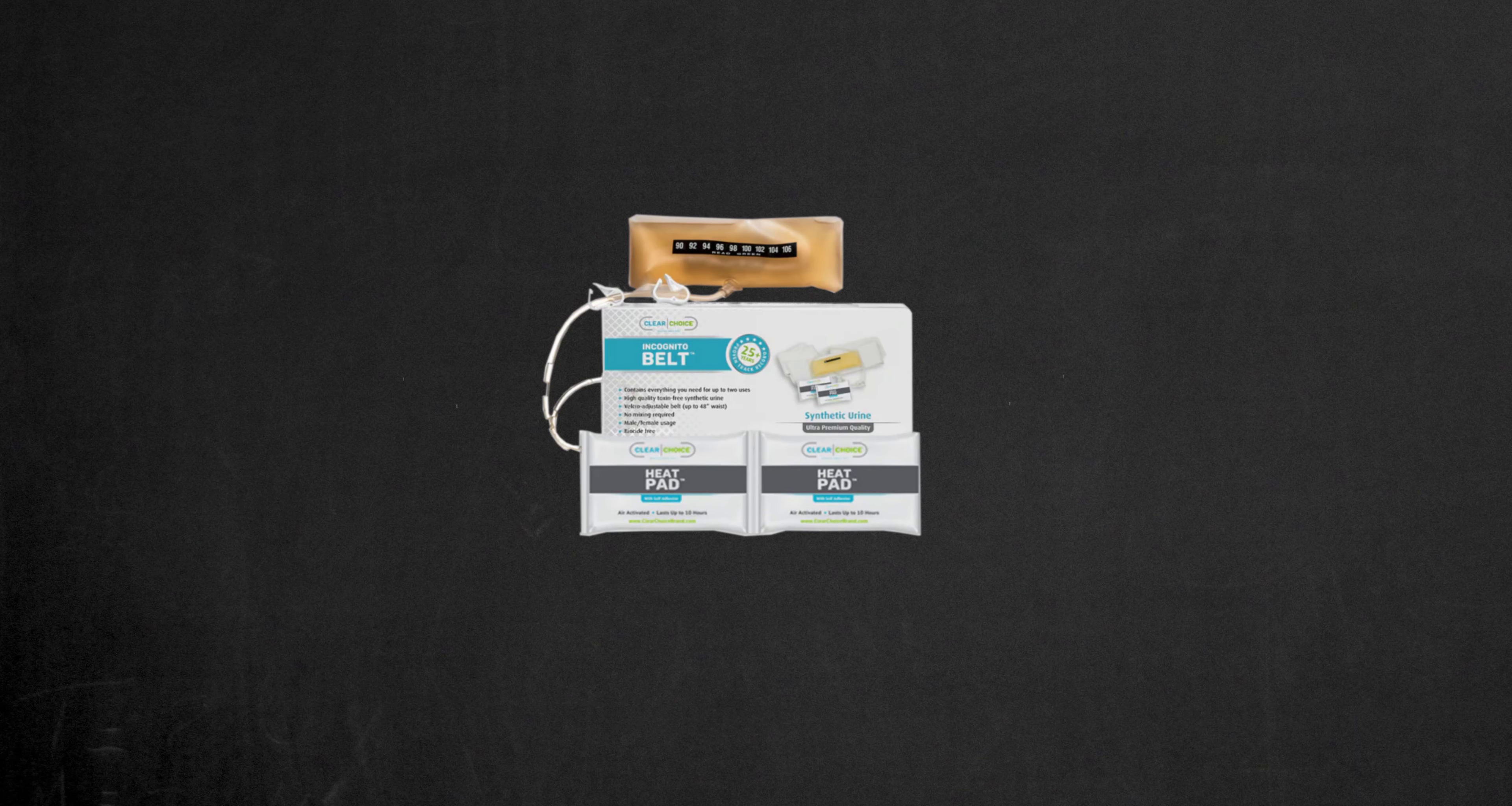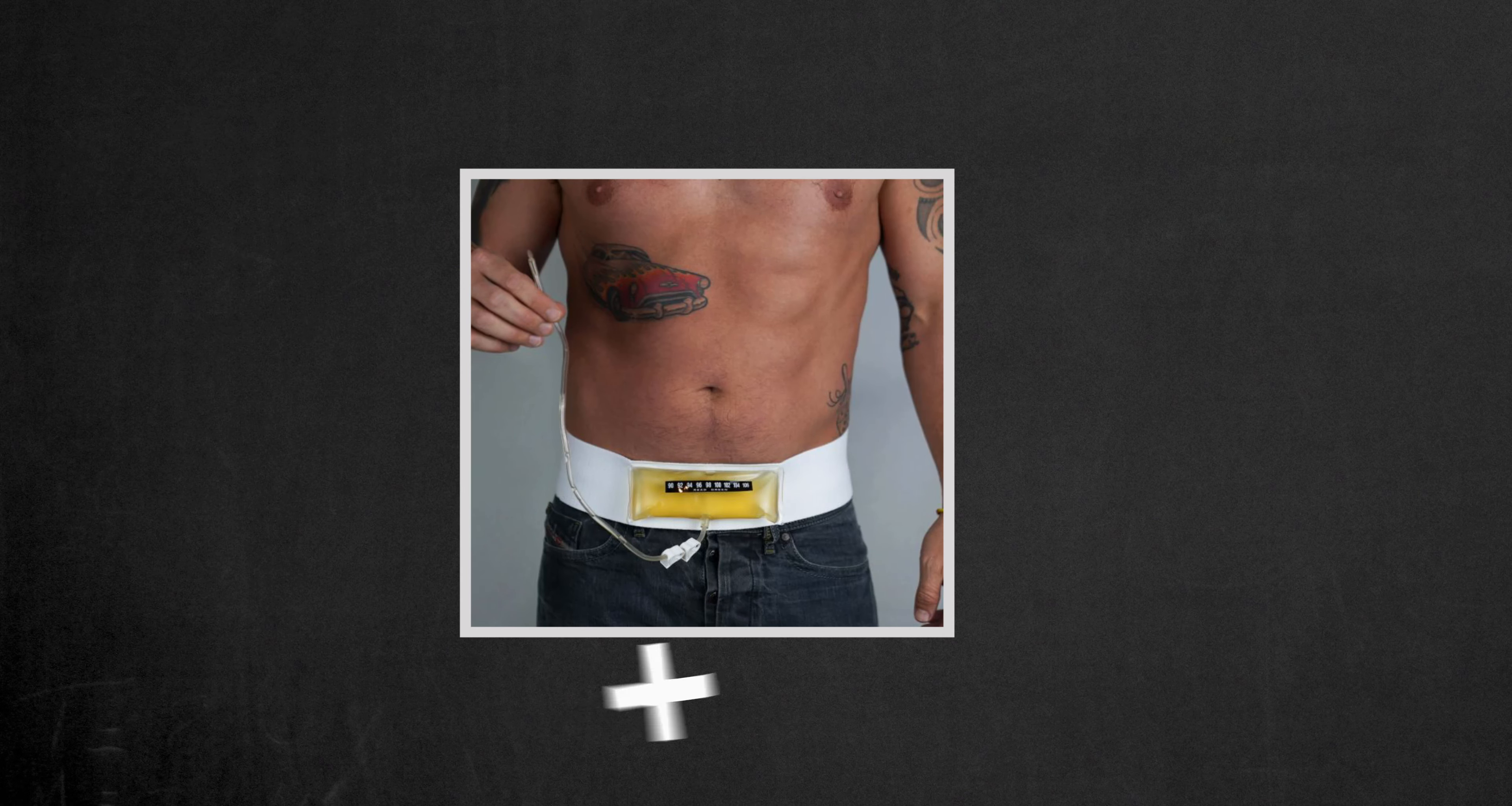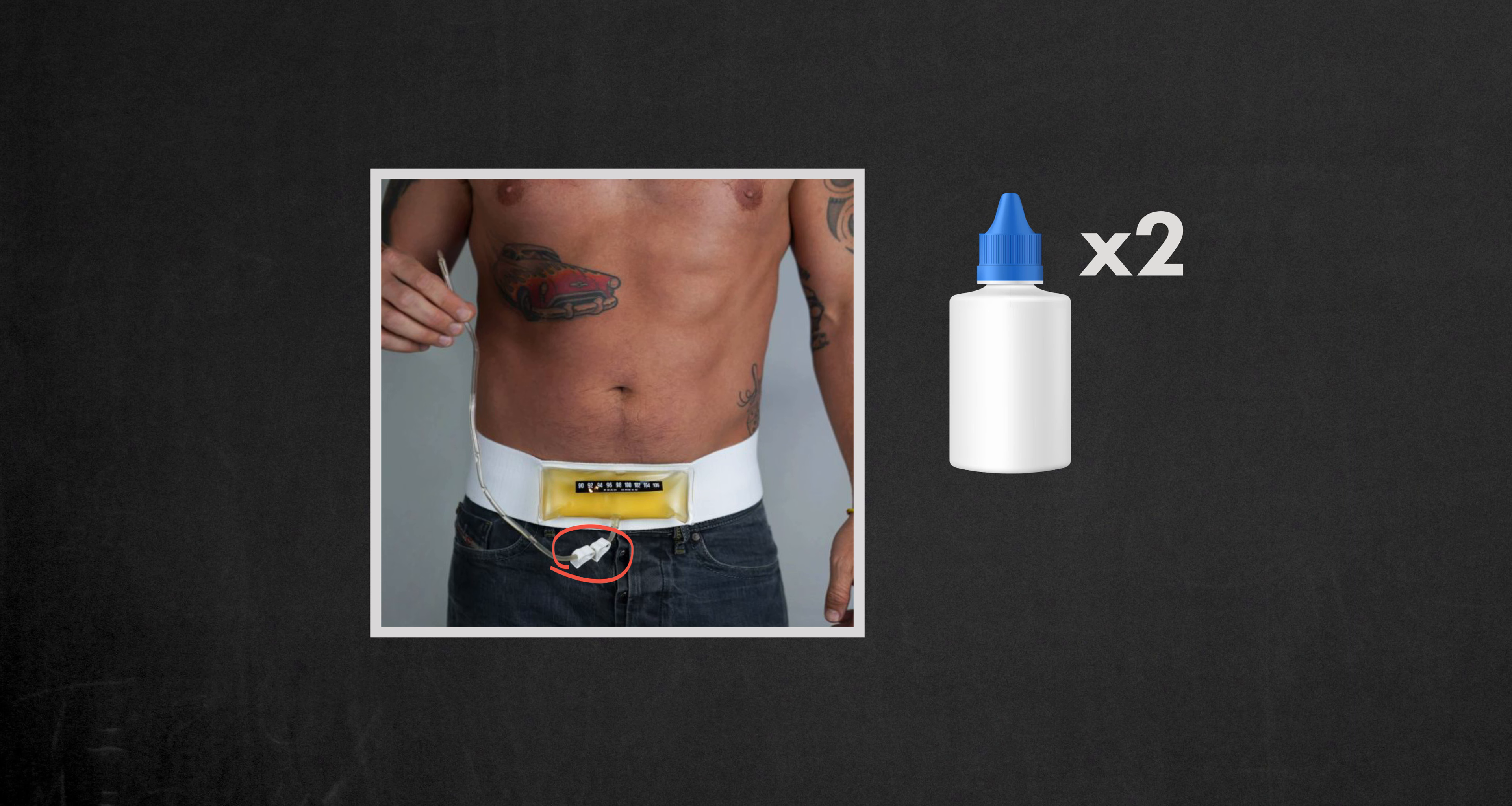Your best bet is the Incognito Belt. It's a urine bag on a stealth belt that's totally invisible under clothes. It comes pre-filled with enough synthetic urine for two uses and features a tube with two clips for convenient release of the urine into the collection cup. It even mimics the sound of peeing.